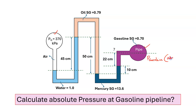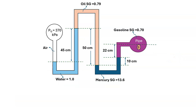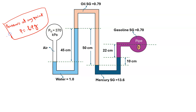First, we have to know that pressure at any point P is equal to h·ρ·g. We also have to remember that P_absolute is equal to P_gauge plus P_atmospheric.